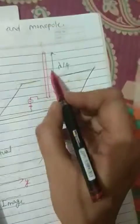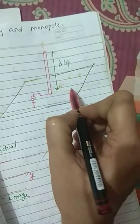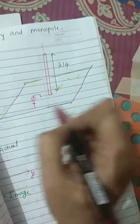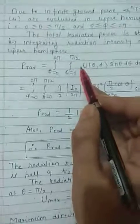So integral limits will be theta will vary from 0 to pi by 2 and phi will vary from 0 to 2 pi. So with these integral limits, if we evaluate these integrals,